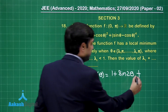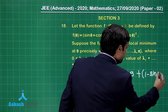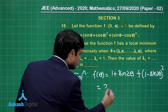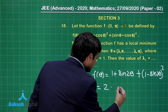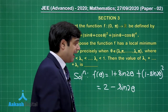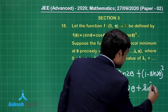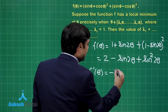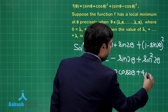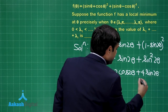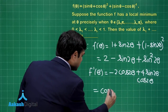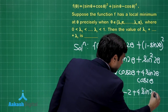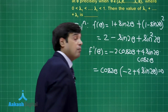Simplifying: f(θ) = (1 + sin 2θ) + (sin θ − cos θ)² = (1 + sin 2θ) + (1 − sin 2θ). Expanding fully: 2 + sin 2θ − 2 sin 2θ − sin 2θ + sin²2θ = 2 − sin 2θ + sin²2θ. Wait, simplifying correctly gives: 2 + sin 2θ − 2 sin 2θ + sin²2θ = 2 − sin 2θ + sin²2θ. For maxima/minima, differentiate: f'(θ) = −2 cos 2θ + 4 sin 2θ · cos 2θ = cos 2θ · (−2 + 4 sin 2θ).